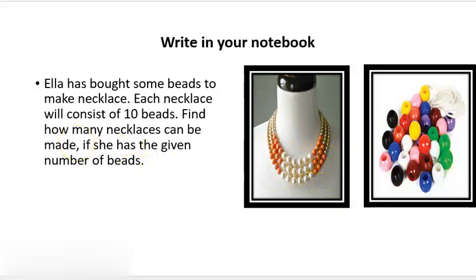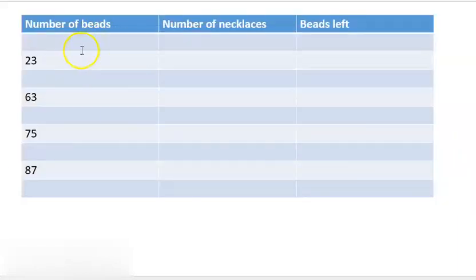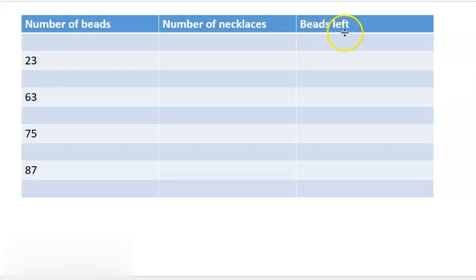Now let's see. Here the table is given. First column is number of beads, meaning the number of beads she is having. Second column is number of necklaces, meaning from the beads how many necklaces she can make. And the third column is beads left, meaning the beads which she is not using.